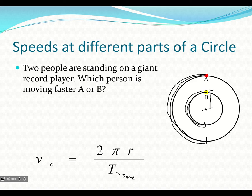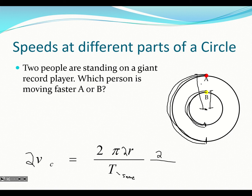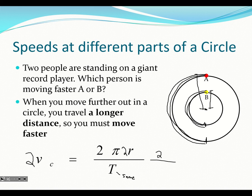What changes is the radius. The distance A travels to get around compared to B is very different because the radii are different. So if A has twice the radius of B, doubling r in vc = 2 pi r over T doubles the numerator while T stays the same, so the speed must be double. A, being double the radius out, is traveling twice as fast as B. When you move further out in a circle, you travel a longer distance, so you have to move faster.